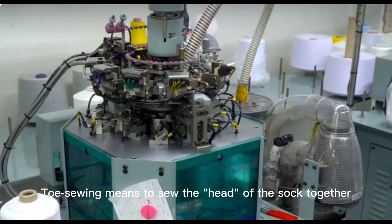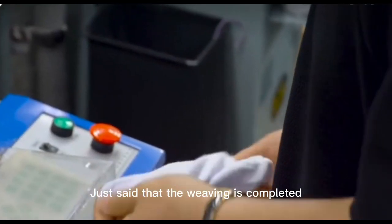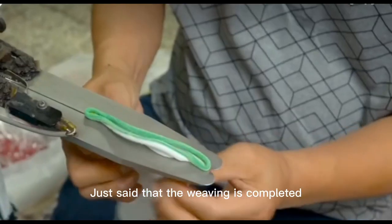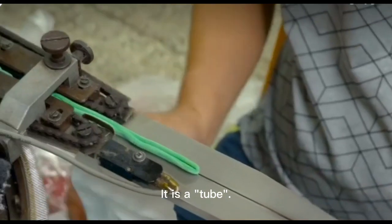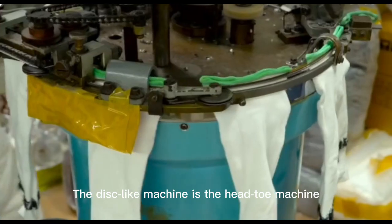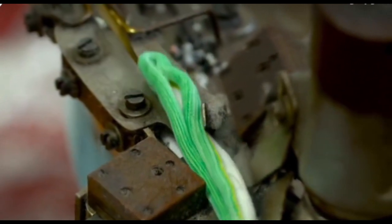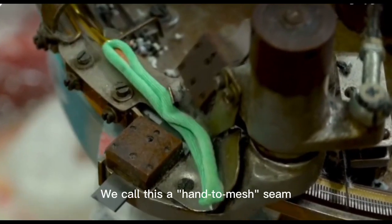Second, the sewing process. Toe sewing means to sew the head of the sock together. Just said that the weaving is completed, it is a tube. Toe sewing means to turn the tube into a sock. The disc-like machine is the head-toe machine. We call this a hand to mesh seam.